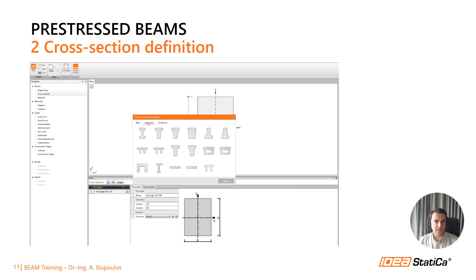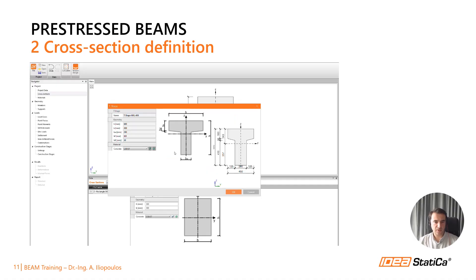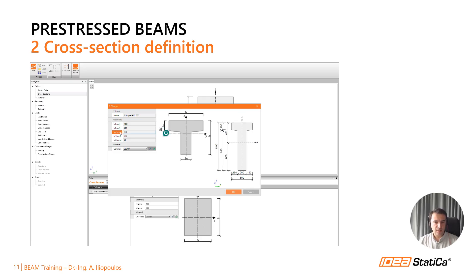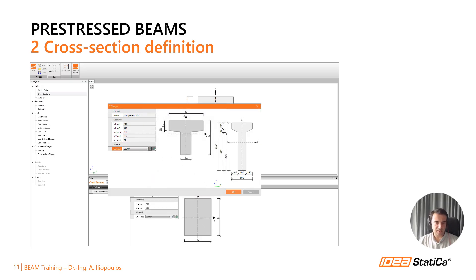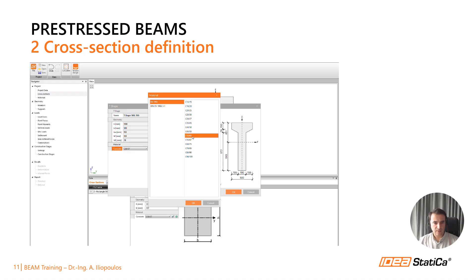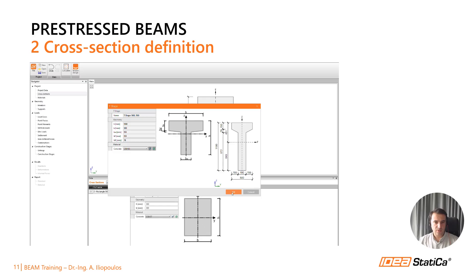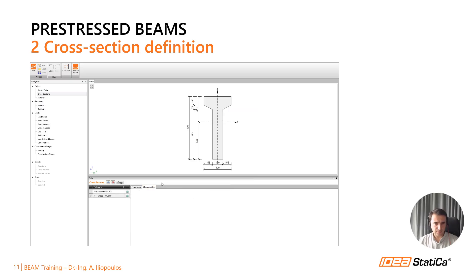I will show you how to define the cross-section. You can click 'plus new section', find your desired template, and just adjust the values in this window. This is all quite simple. You can edit the material of the cross-section or simply pick one from the database, and you can see the characteristics of the cross-section in a table that can be further exported.